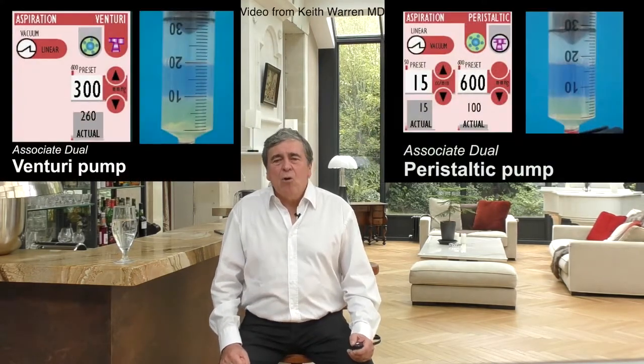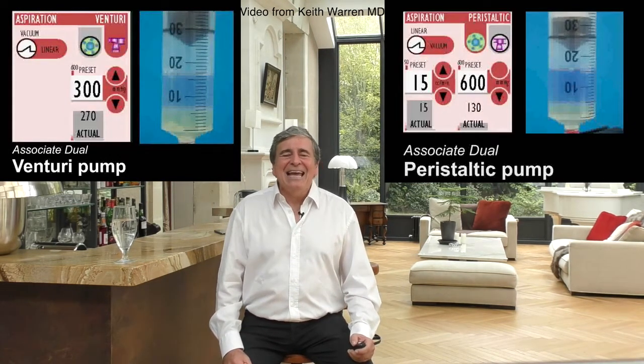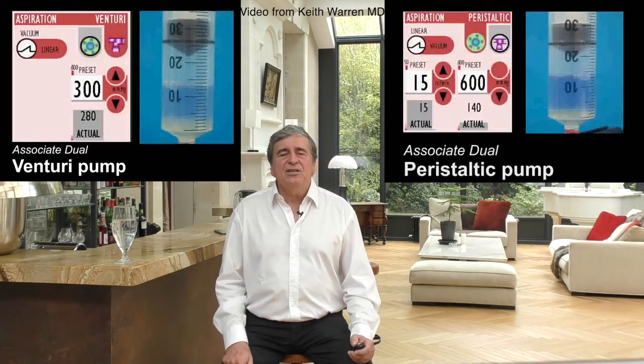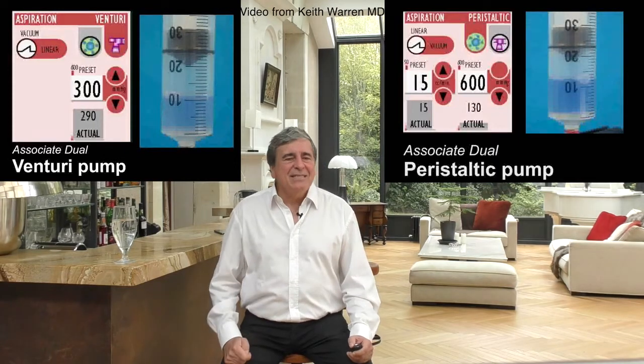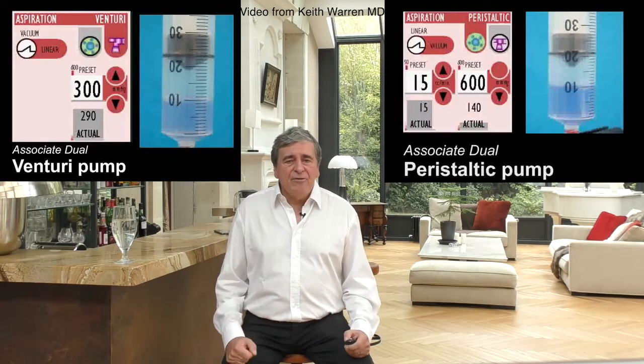For the same vacuum — the same depression selected at the foot pedal — there will not be the same quantity of fluid entering the end piece. This aspiration rate will be all the more unpredictable as it will depend on the viscosity of the fluid at the end piece level, but also at the level of the entire aspiration tubing. This is perfectly demonstrated in a video by Keith Warren, which shows two syringes each containing 10 cc of air, 10 cc of water, and 10 cc of honey — so 30 cc. The one on the left is connected to a venturi pump set at minus 300 mmHg, the one on the right to a peristaltic pump set at 15 cc per minute, designed to pump the syringe in two minutes.